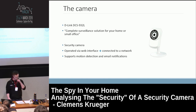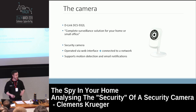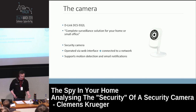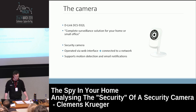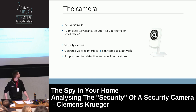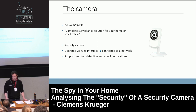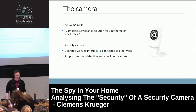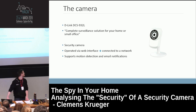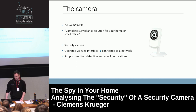Let's get to the interesting part — the actual camera. The camera I chose was the D-Link DCS932-L. It's marketed by D-Link as the complete surveillance solution for your home or small office, so it's aimed at home use. It's a security camera operated via a web interface, connected to a network. It has cool features like motion detection and email notifications, and those email notifications will become important later on. The decision for this specific device was kind of random — I basically just chose the one that popped up on Amazon.